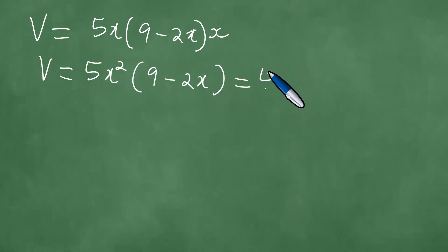Multiplying through gives us 45x² minus 10x³.